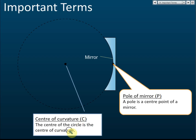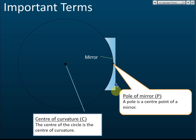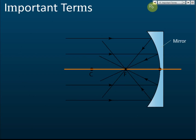The center of the curve itself is called the pole. So the pole is the center of the mirror. You will find that the distance from the pole to either end of the curve is the same.